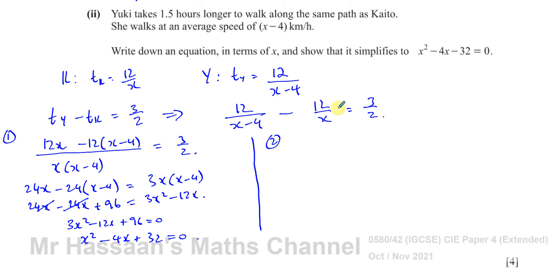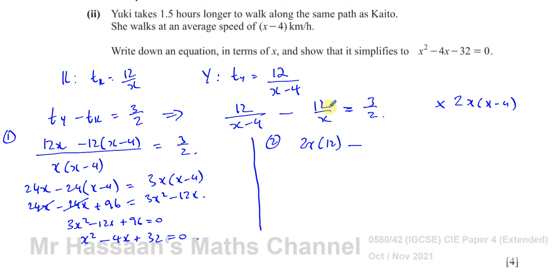Method 2: Multiply every term by the LCM of all denominators, which is 2x(x − 4). Multiplying 12/(x − 4) by 2x(x − 4): the (x − 4)s cancel, leaving 2x × 12 = 24x. Multiplying 12/x by 2x(x − 4): the x's cancel, leaving 24(x − 4). Multiplying 3/2 by 2x(x − 4): the 2s cancel, leaving 3x(x − 4).